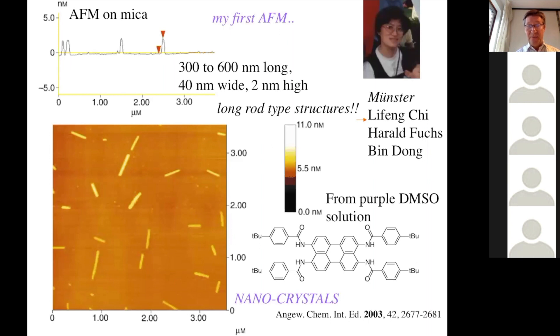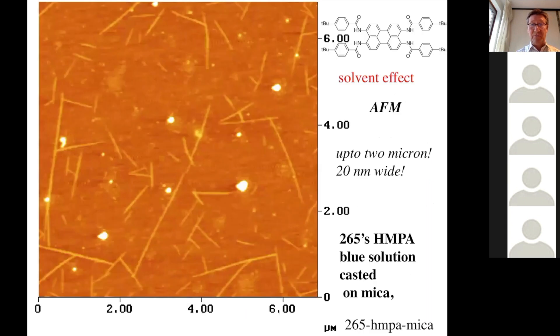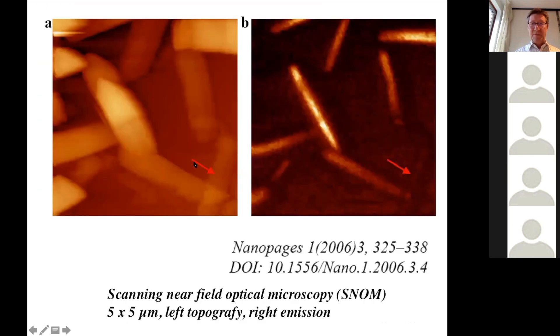This is one AFM of molecules on mica. So these little stripes here, they are molecules consisting of porphyrin molecules, and they are like 600 nanometers long. AFM, you can probe molecule organization as well. And in this case, there was a solvent effect. So if you use a different solvent, these stripes are thinner.